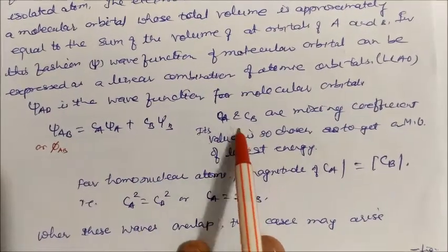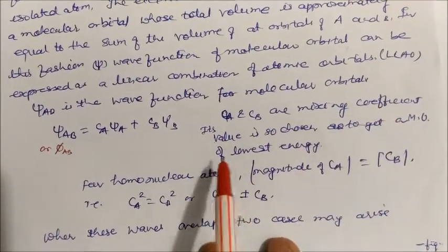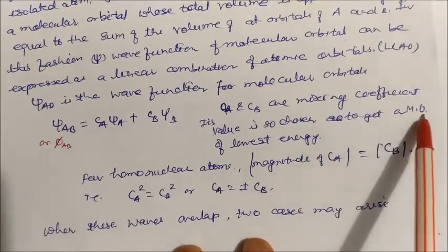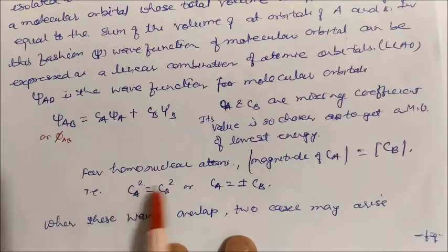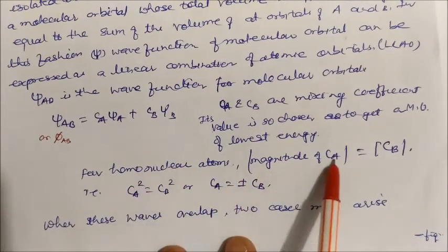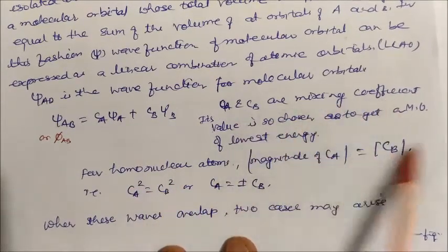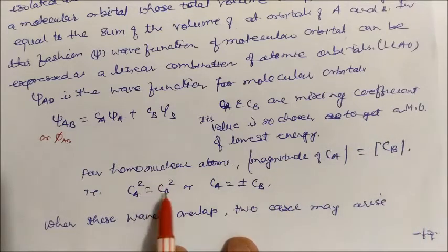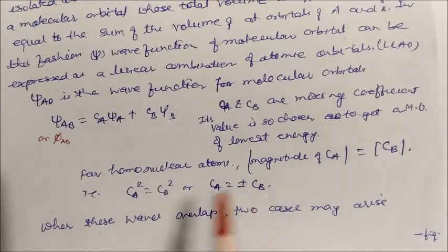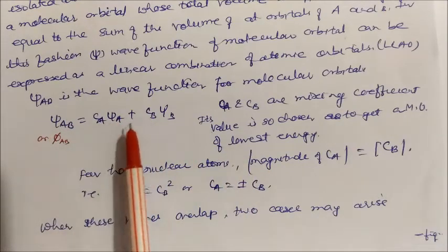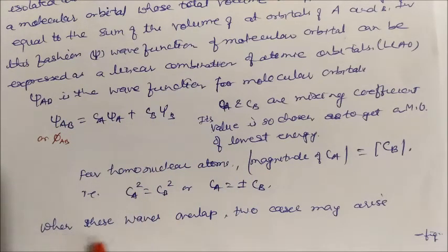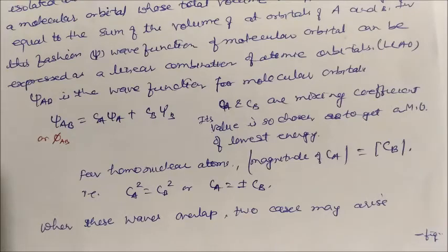CA and CB are the mixing coefficients, and their values are chosen to obtain the molecular orbital of lowest energy. For homonuclear atoms, the magnitude of CA and CB are equal to each other. So for homonuclear atoms, ψ(A,B) equals ψA plus ψB. When these waves overlap, we get two types of cases.